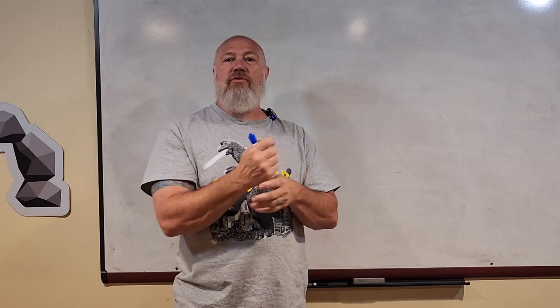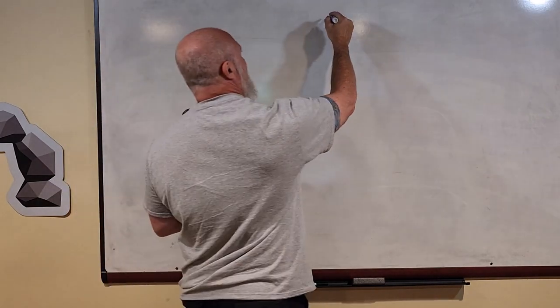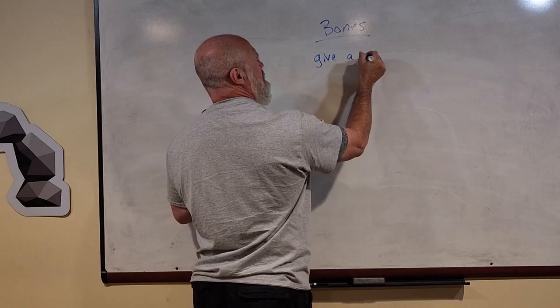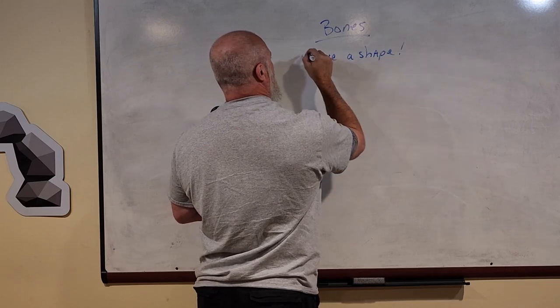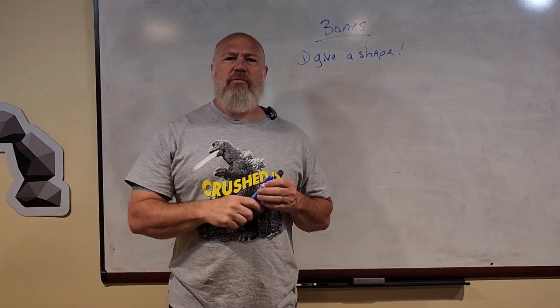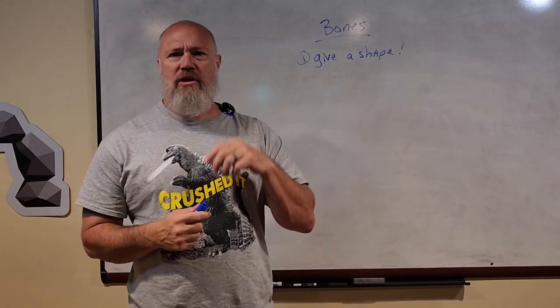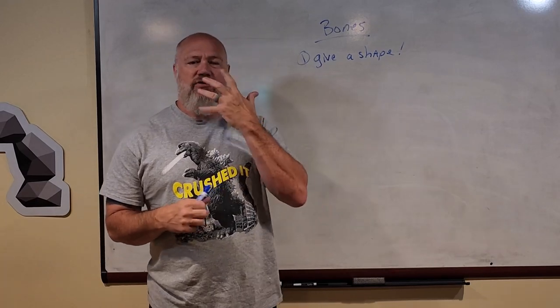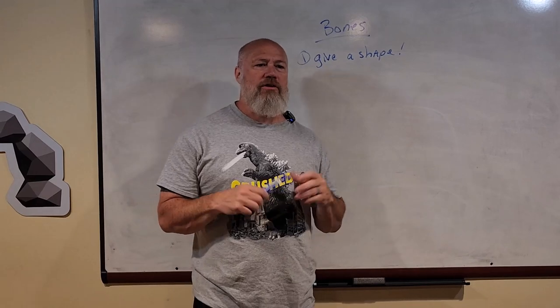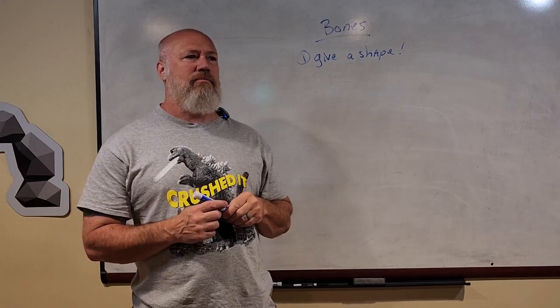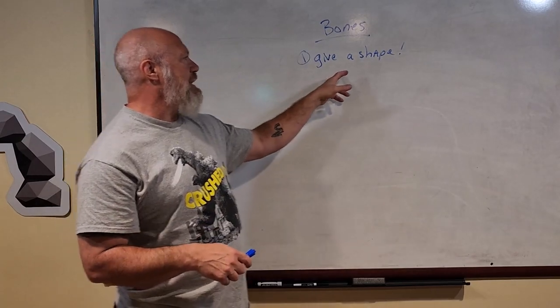Let's talk about bones — the rigid, stiff parts that hold you up and give you shape. Bones do a couple of different things. First, bones give you shape. All human beings basically look the same — almost everybody has two arms, two legs, and one head. Sometimes variations occur and those are called congenital anomalies, but most people have the same basic shape.